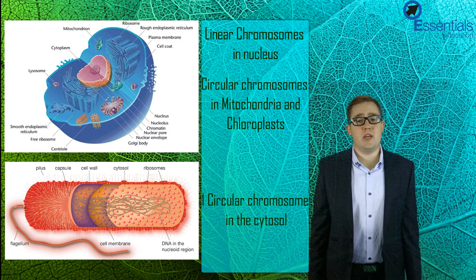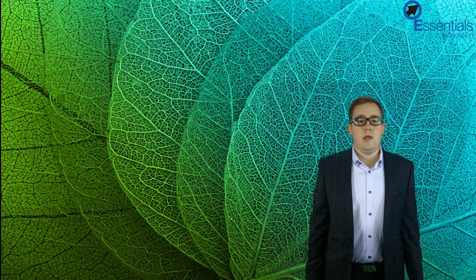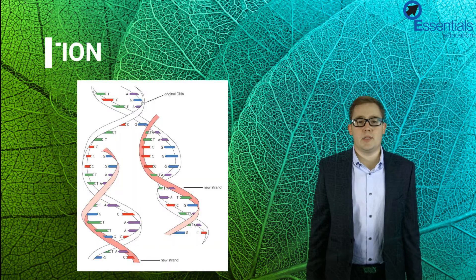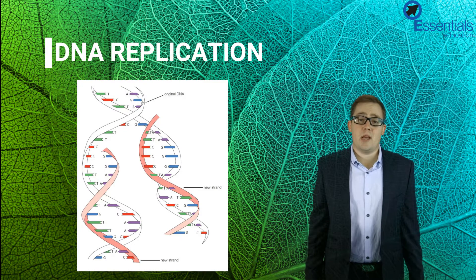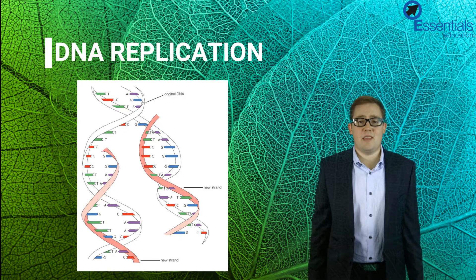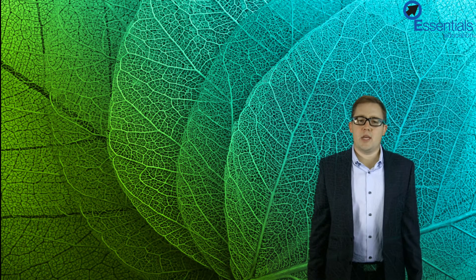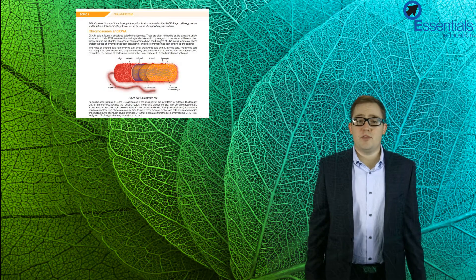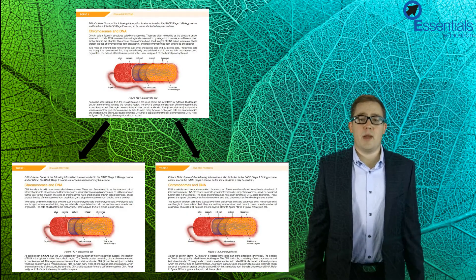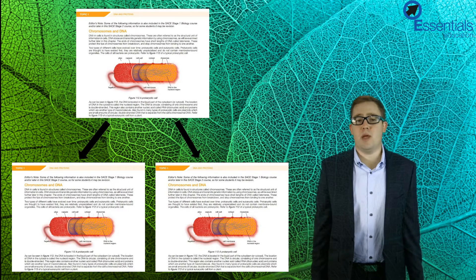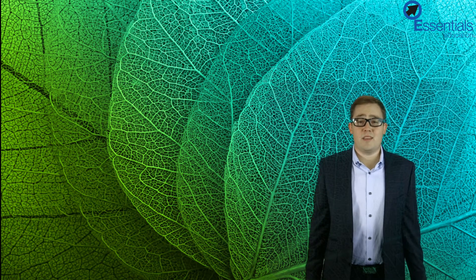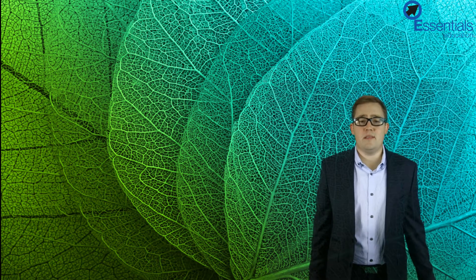Now that we understand the general structure of DNA, let's have a look at how that structure allows it to replicate. This process is called DNA replication. DNA replication must occur before any cell division, as it allows two new cells to be genetically identical to each other and to that of the parent cell. You can think of replication like photocopying a piece of paper — you end up with two copies of the same information to give to two different people, or in this case, two new cells.